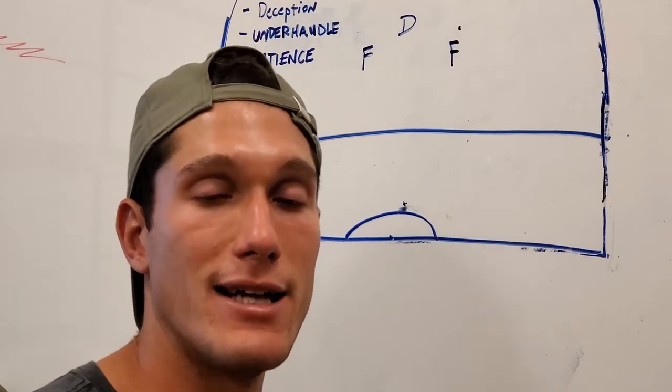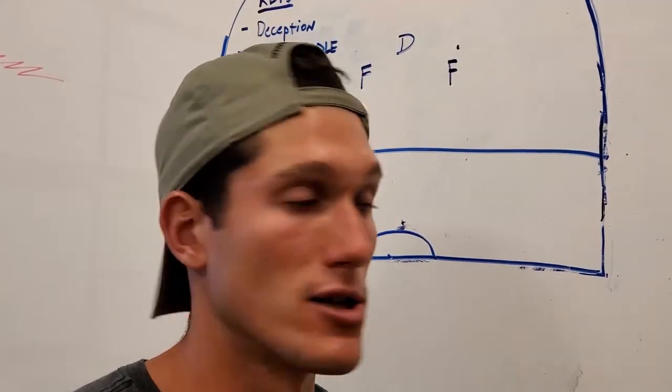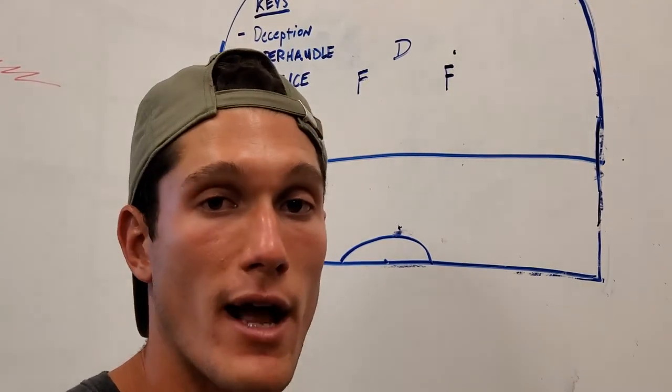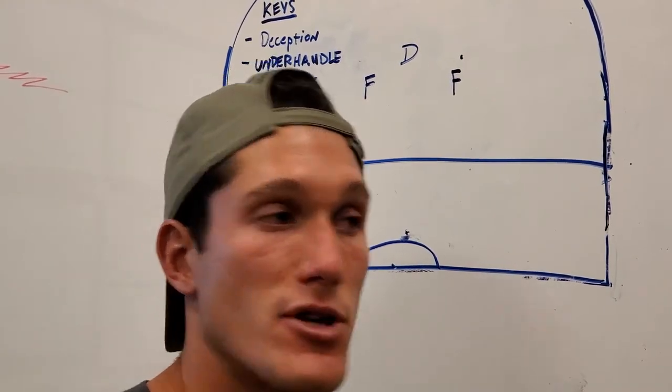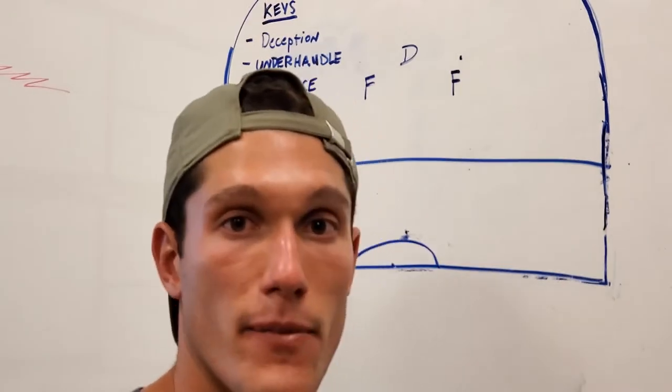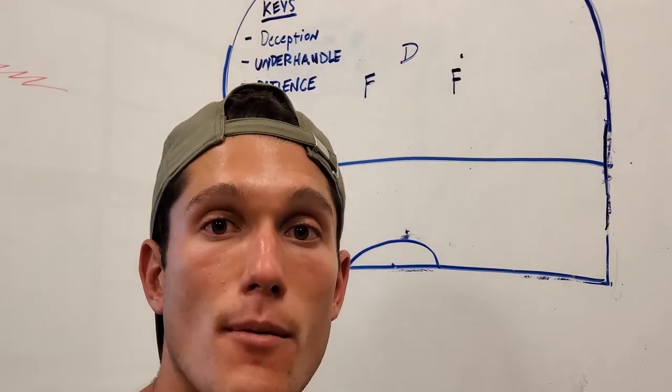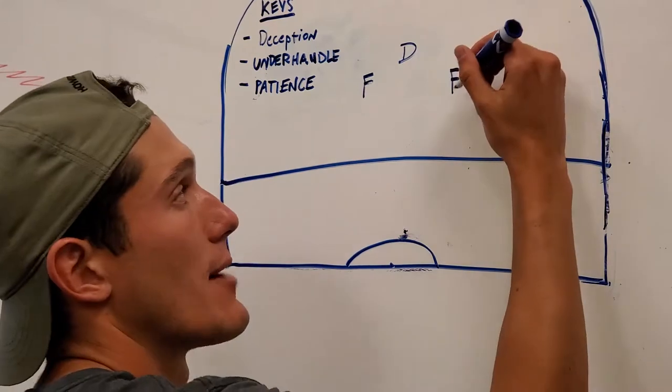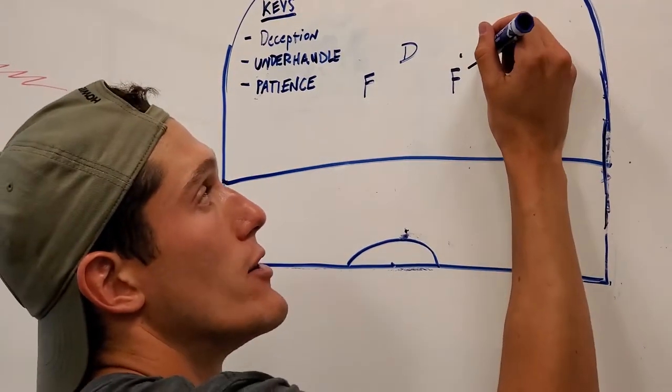The first key I want to talk about is having deception. Deception can be with my eyes - I can look at the net, look at my teammate, so that the defenseman and the goalie don't know what's coming. Another way of deception is throwing my shoulders into a fake shot or pass.